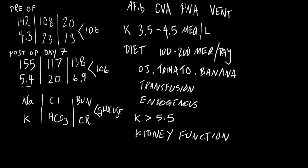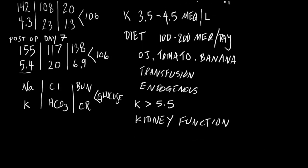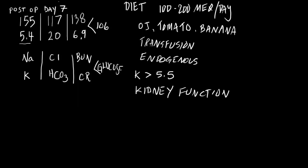The main way that we eliminate potassium is through the urine, so kidney function is extremely important. Now, what are ways that we can eliminate potassium? Let's say we have a potassium of 5.5 and we want to eliminate it—not temporizing the situation, but elimination.